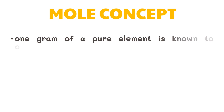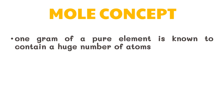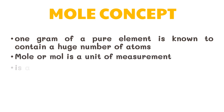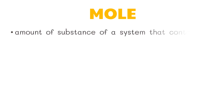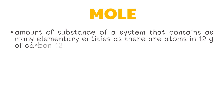When dealing with particles at an atomic or molecular level, even one gram of a pure element is known to contain a huge number of atoms. This is where the mole concept is widely used. It primarily focuses on the unit known as a mole, which is a count of a very large number of particles. One mole refers to the amount of substance of a system that contains as many elementary entities as there are atoms in 12 grams of carbon-12.